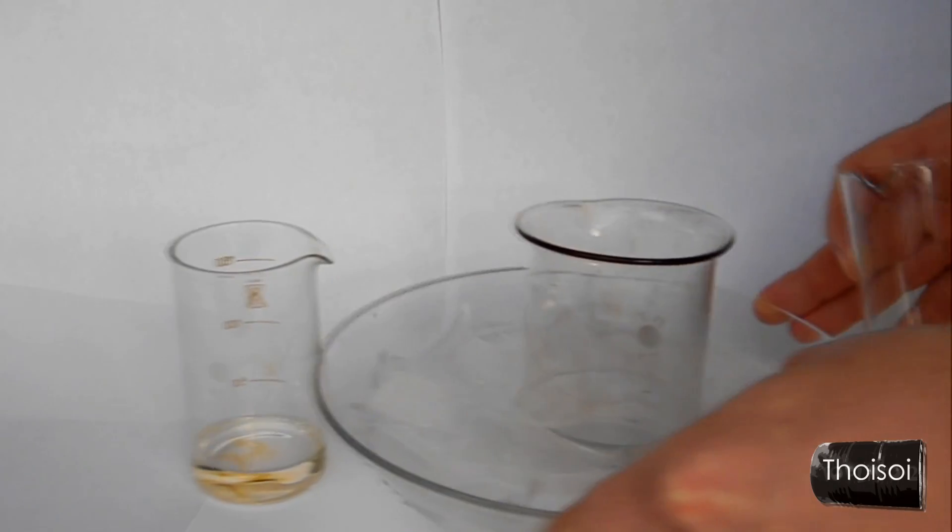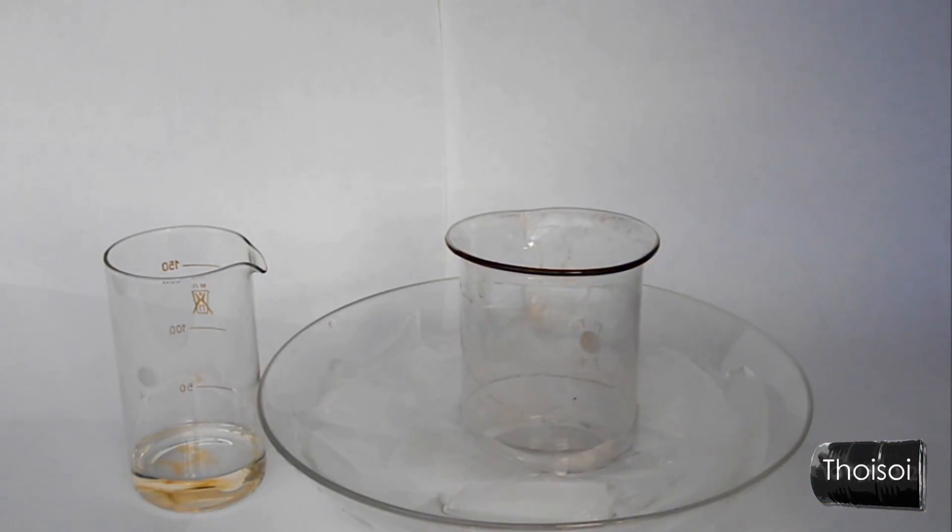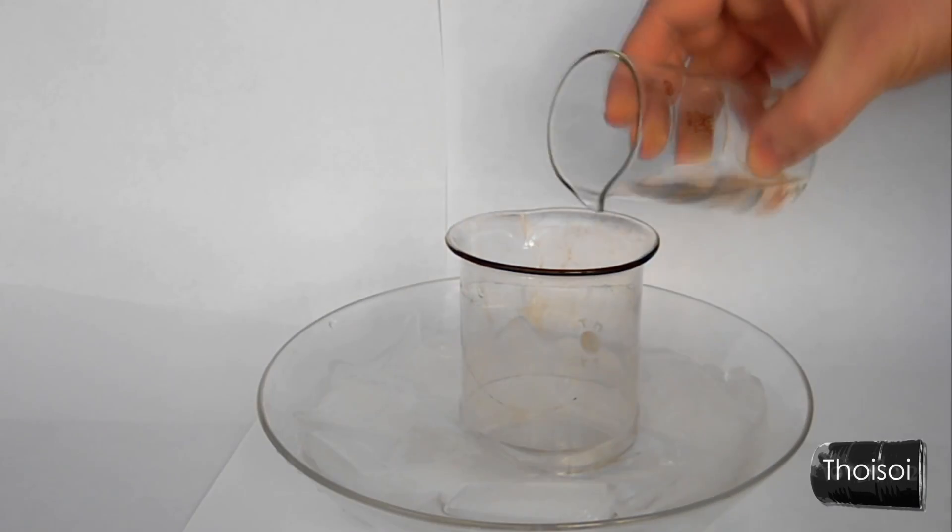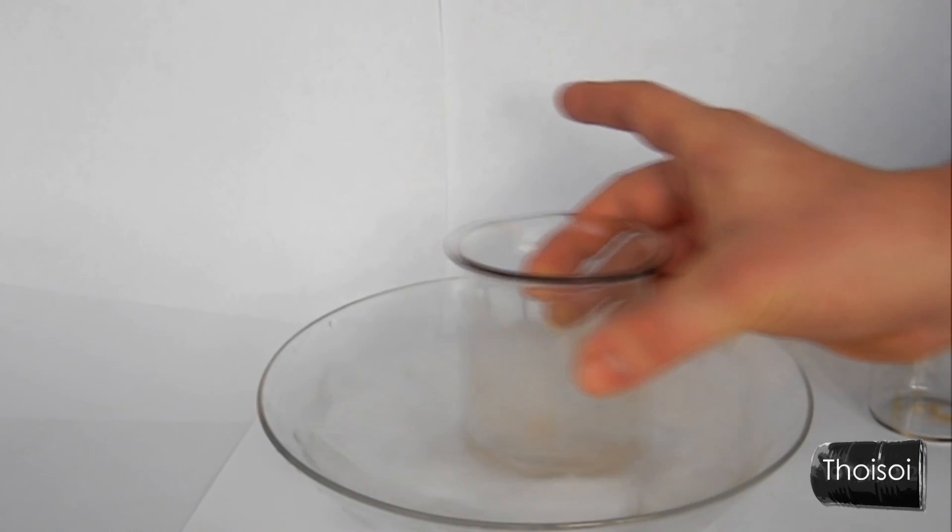We will mix the acids in this refrigerator. When acids are mixed, a lot of heat is produced, and the mixture needs to be cooled. The mixture of these two acids is called a nitrating acid mixture.